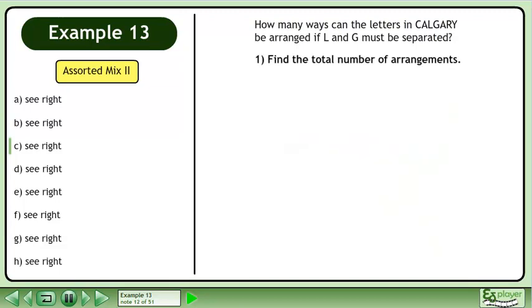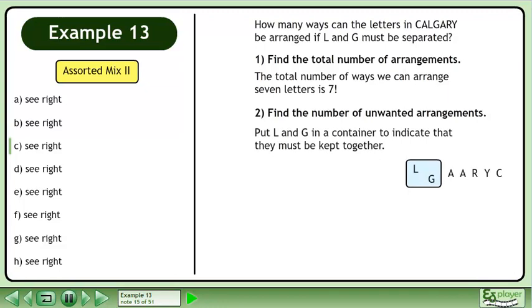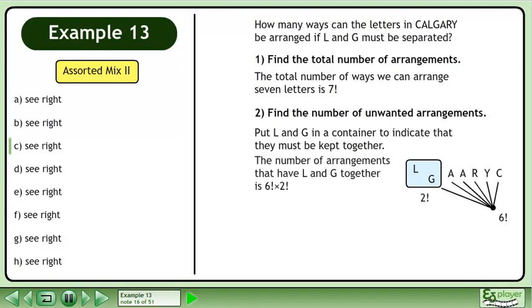Pause the video and organize the information about this question. First, find the total number of arrangements. The total number of ways we can arrange seven letters is 7 factorial. Next, find the number of unwanted arrangements. Put L and G in a container to indicate that they must be kept together. The number of arrangements that have L and G together is 6 factorial times 2 factorial.